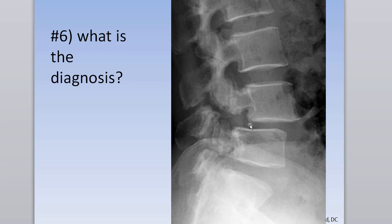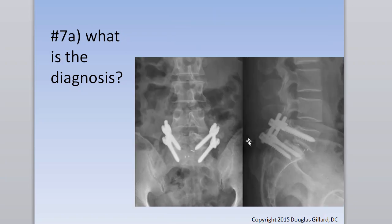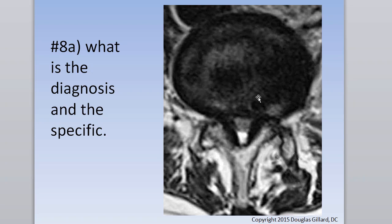This is a grade one, approaching grade two isthmic spondylolisthesis. If everything else fails, the fix is a lumbar interbody fusion — specifically a transforaminal lumbar interbody fusion here. Know what those three little metallic markers are: they are cage markers placed inside the interbody spacer. When an interbody fusion is performed, they remove the nucleus pulposus and some of the annulus and insert a spacer to restore disc height.